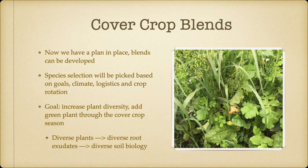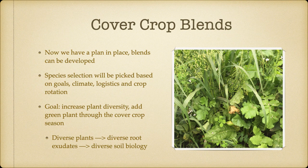Now we have our plan in place and we can start looking at developing a blend. Species selection would be based on what our goals are, what the climate is, what your logistics are, and your crop rotation. One of the goals that should be in our minds is increasing the plant diversity in our rotation, growing on that land throughout our rotation, and having that green plant growing in the vegetative stage through all of that cover crop season. The more diversity we have in the plants, the more diversity we get in the root exudates, which drives more diversity in our soil microbiology.